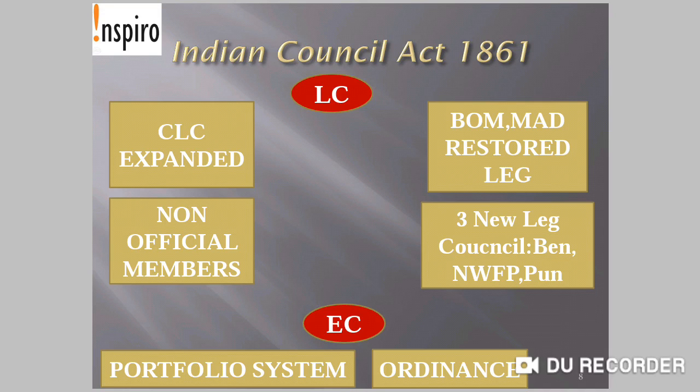Three new Legislative Councils were also formed — in Bengal, Northwest Frontier Provinces, and Punjab. In Bengal it was formed in 1862, Northwest Frontier Provinces in 1866, and Punjab in 1897.